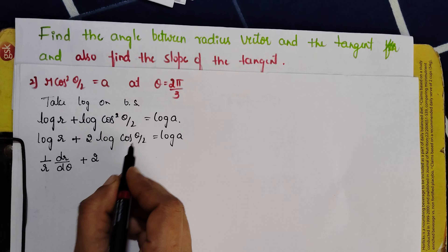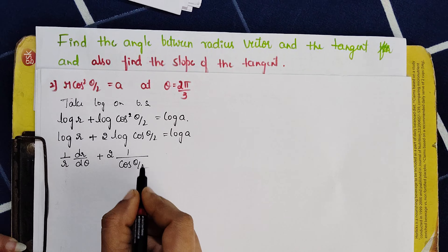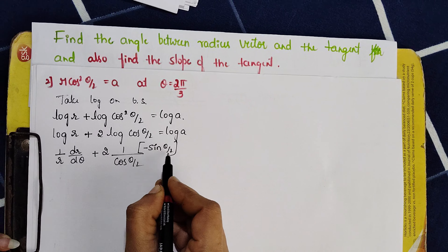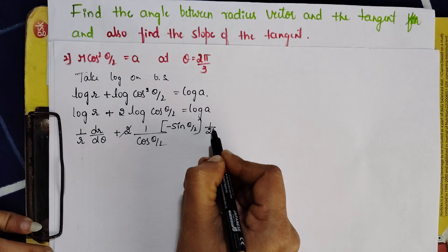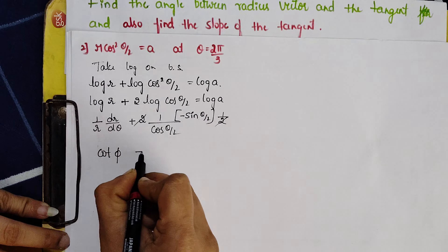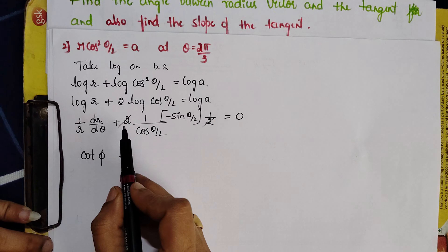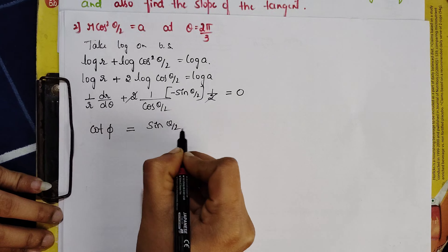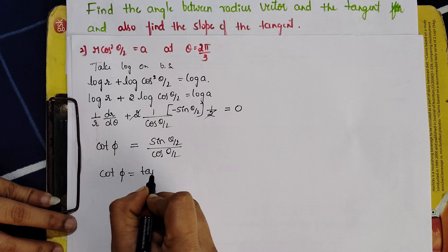Differentiating cos(θ/2) with respect to θ gives −sin(θ/2)·(1/2). The 2s cancel. Since log a is constant, its derivative is 0. Shifting the term to the right-hand side, −sin(θ/2)/cos(θ/2) becomes +sin(θ/2)/cos(θ/2), and sin/cos is tan. So cot φ = tan(θ/2).